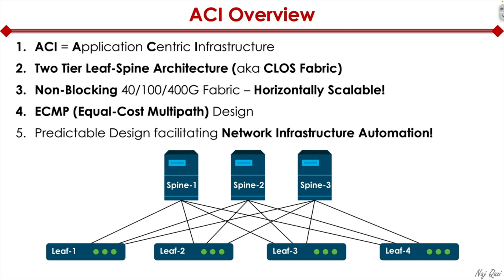An important element from the ACI design perspective is the predictable nature of this design. In the three-tier architecture, there was sometimes a collapsed core where core and distribution were collapsed into a single layer, which mimicked a two-tier architecture but wasn't exactly that. You could have a single link or an EtherChannel with multiple bundled links between the core, which created a lot of one-off snowflake type designs. When it comes to automation, we don't want snowflake designs — we want a predictable design that is always the same across the board.